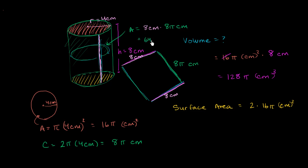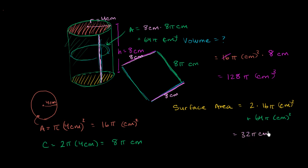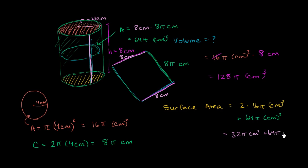So the area of just the lateral surface — the part that wraps around — is 8 centimeters times 8 pi centimeters, which equals 64 pi centimeters squared. For the total surface area, we add the top and bottom — 2 times 16 pi — plus the lateral surface: 64 pi centimeters squared. So that's 32 pi plus 64 pi, which equals 96 pi centimeters squared, just over 300 square centimeters.